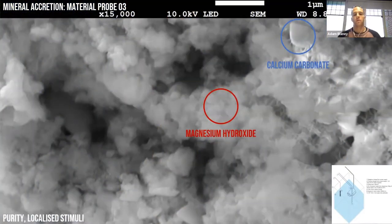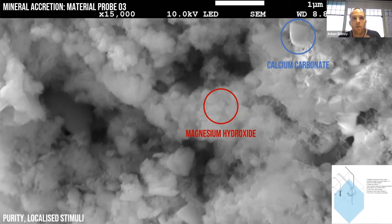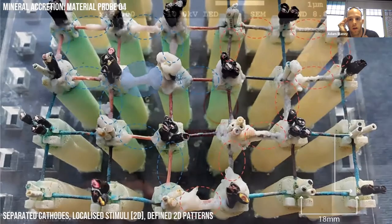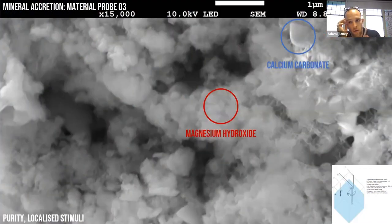Moving on, I tried to address the contamination issue by replacing an anode that could be dissolved in the mineral accretion process with a carbon one. The way you analyze or document your material results can also throw up new insights. This was based on scanning electron microscope analysis, which highlighted this issue of purity but also localized stimuli.